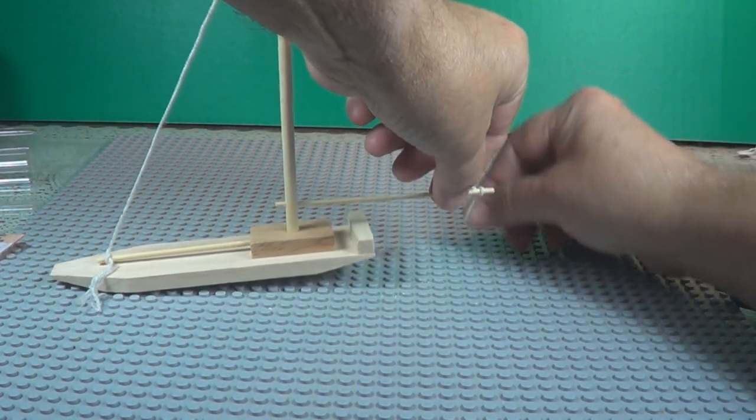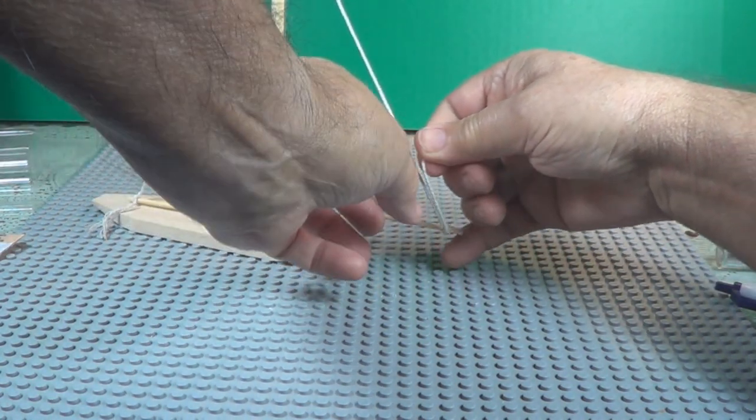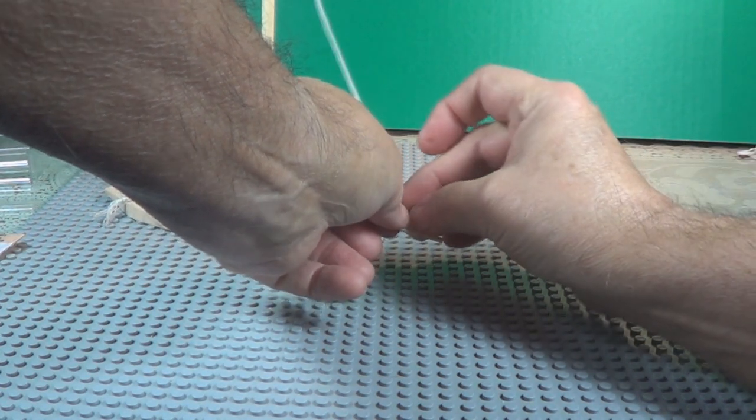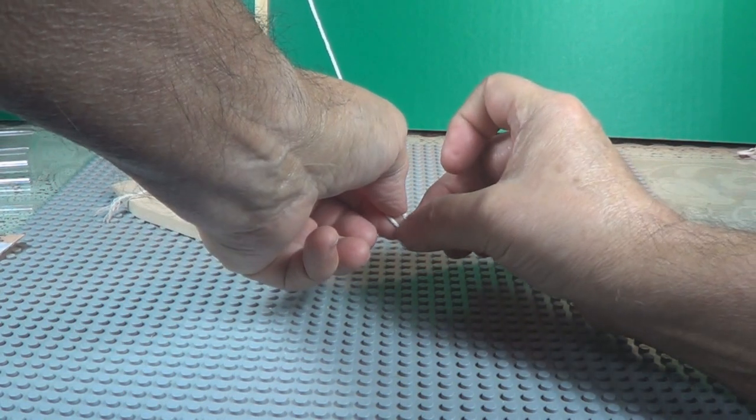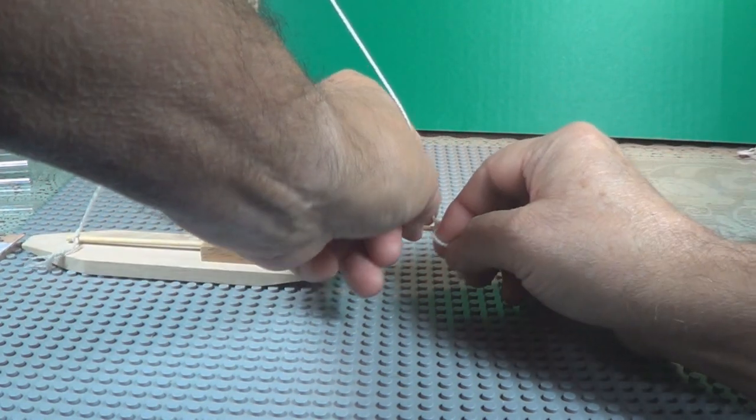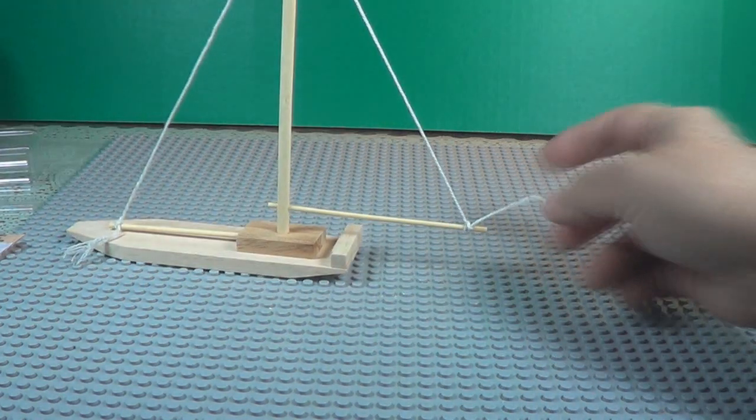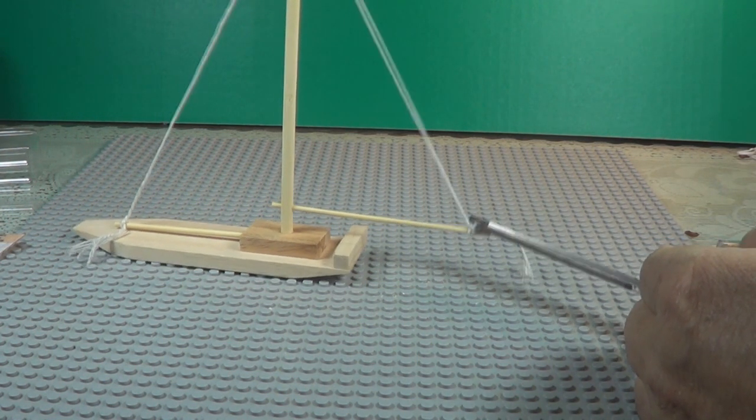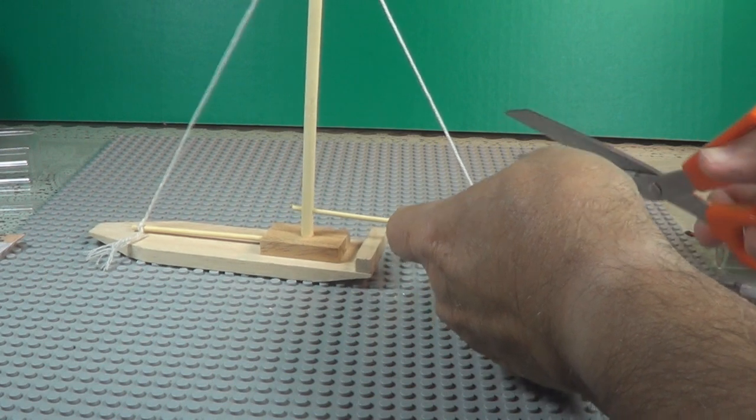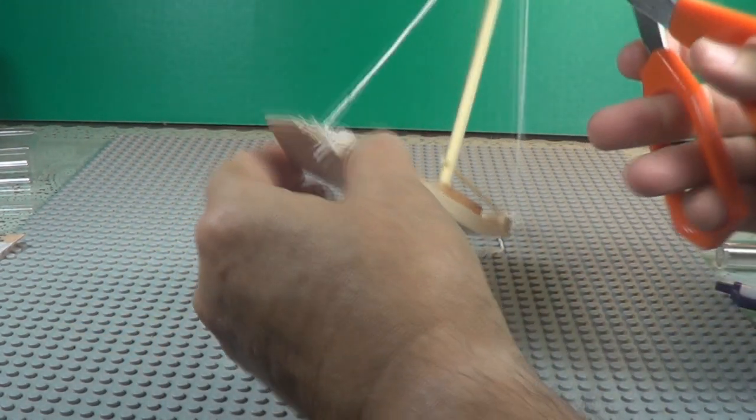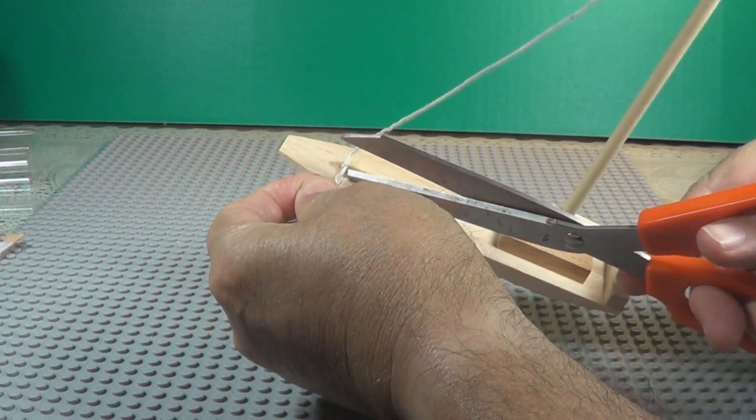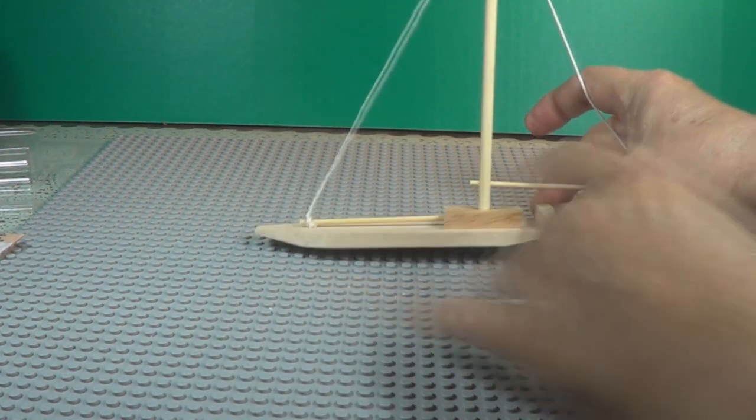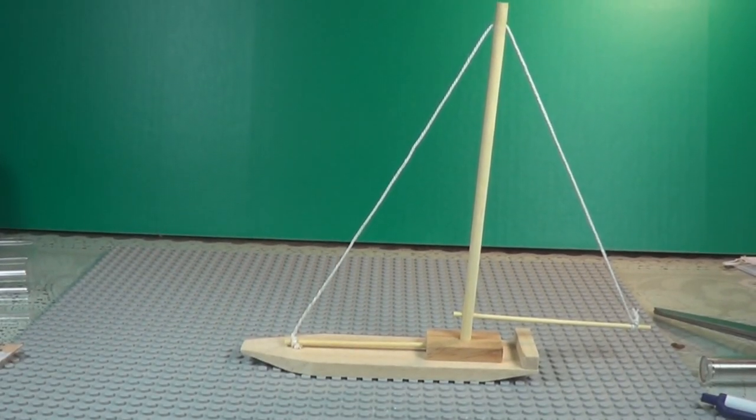Now tie this one on the end down here too. Tie it down. Let's cut off that string, an excess string here. There we go. Okay, got the string on now.